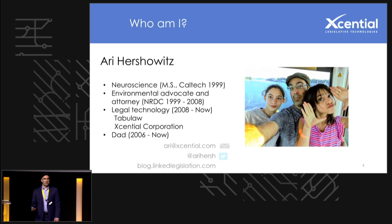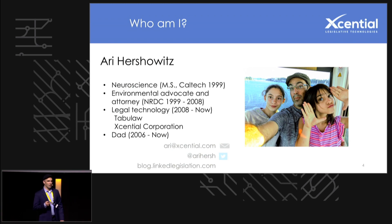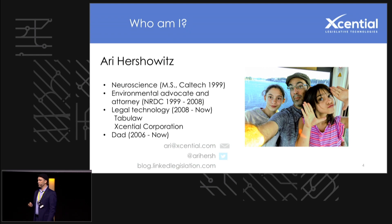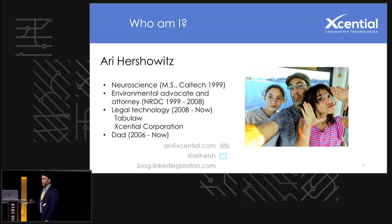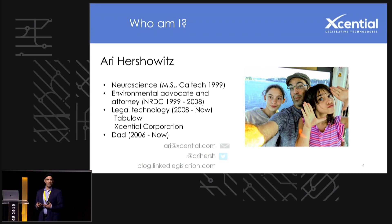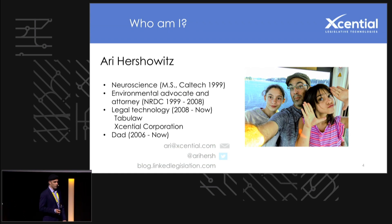Just to give you a sense of who I am: I took a circuitous route to what I'm doing today. I started in neuroscience, did a number of different kinds of work before I became a lawyer. And when I did become a lawyer, I saw there are a lot of processes that aren't working in the most efficient way. So I went into technology, and that's what I do today.